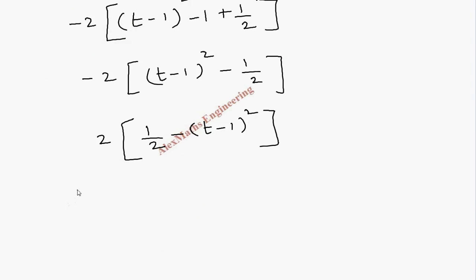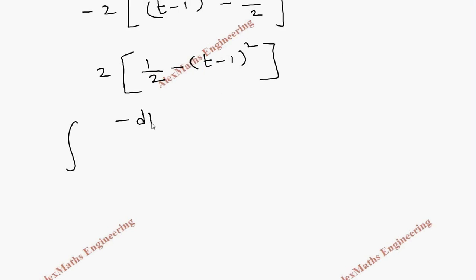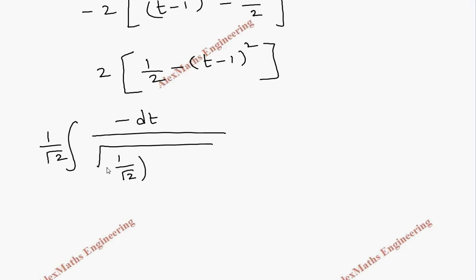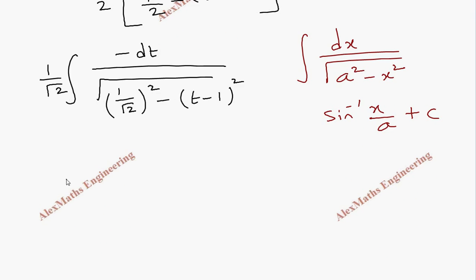Coming to the integration, we have ∫ −dt / √(−2t² + 4t − 1). Taking √2 outside, the expression under the root becomes (1/√2)² − (t−1)². This is of the standard form ∫ dx / √(a² − x²) = sin⁻¹(x/a) + C. Applying it: the result is −(1/√2) · sin⁻¹((t−1) / (1/√2)) + C.